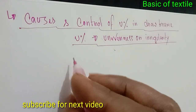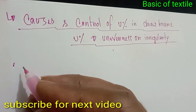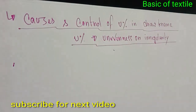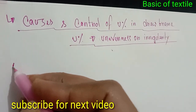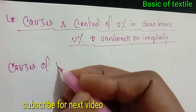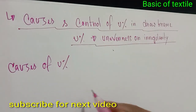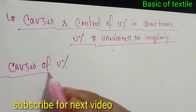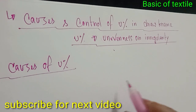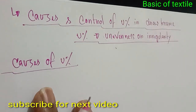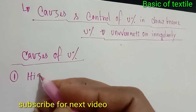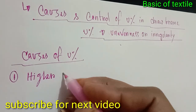Now let's look at the causes. There are various causes of U%. One cause is higher U% in the draw frame.